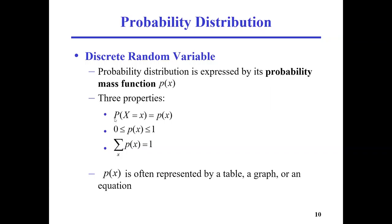So there are three properties. Uppercase P, uppercase X equals lowercase x — it means that the probability that X equals x can be calculated as the output of function lowercase p of lower x. Lower x is the input of the probability mass function, usually a specific value. The output is always between zero and one, because probability cannot be negative or larger than one. And if you add them all up, the summation of p(x) is always equal to one.